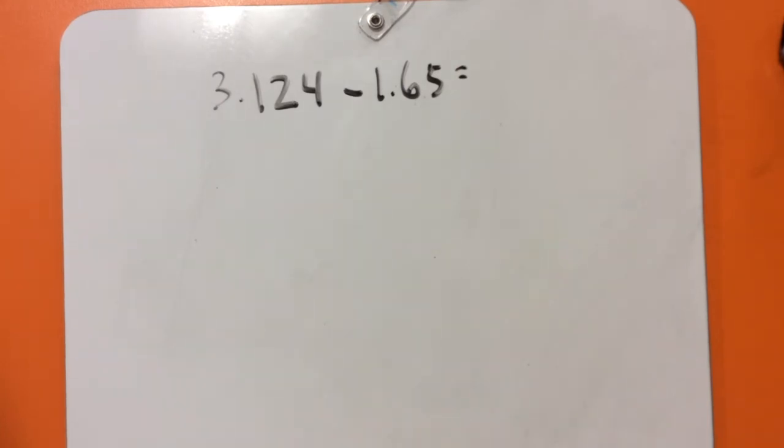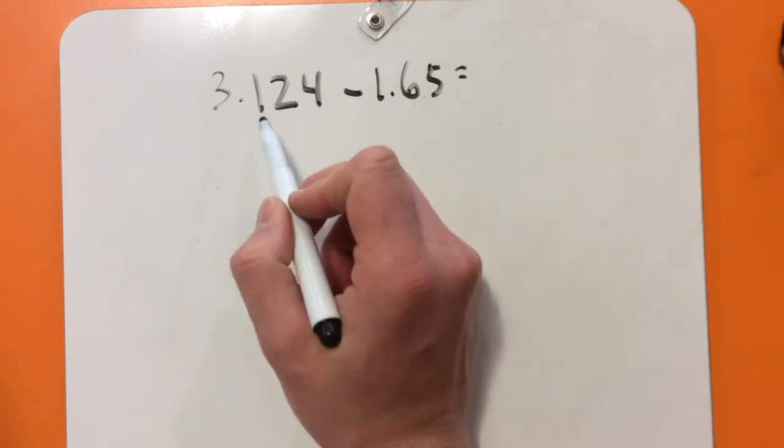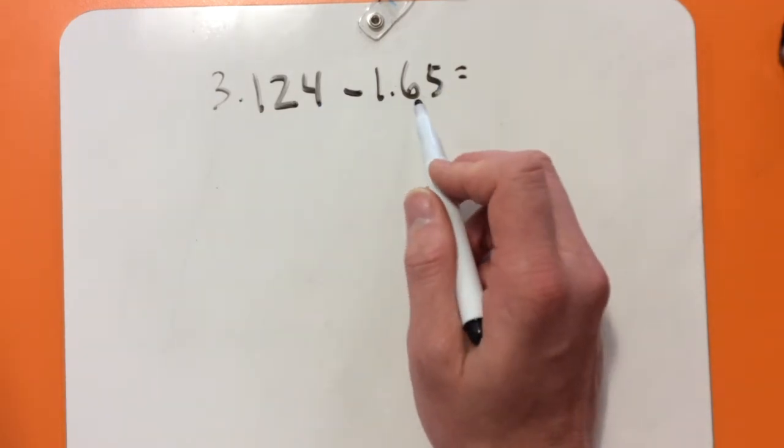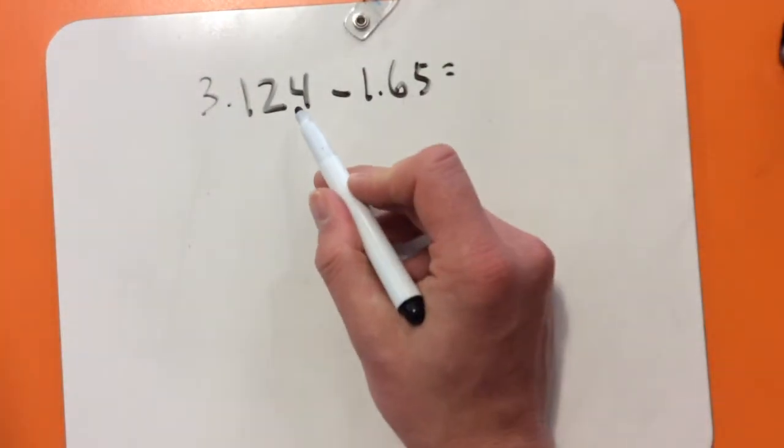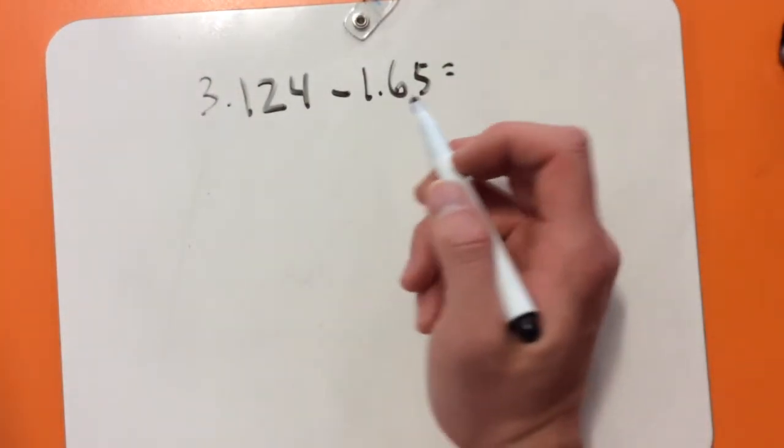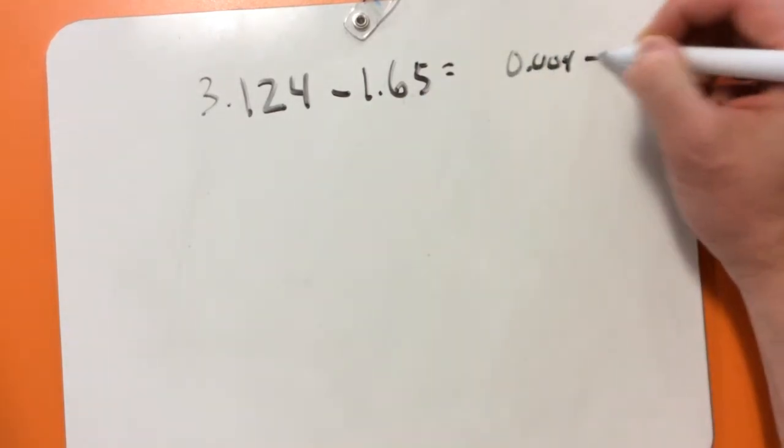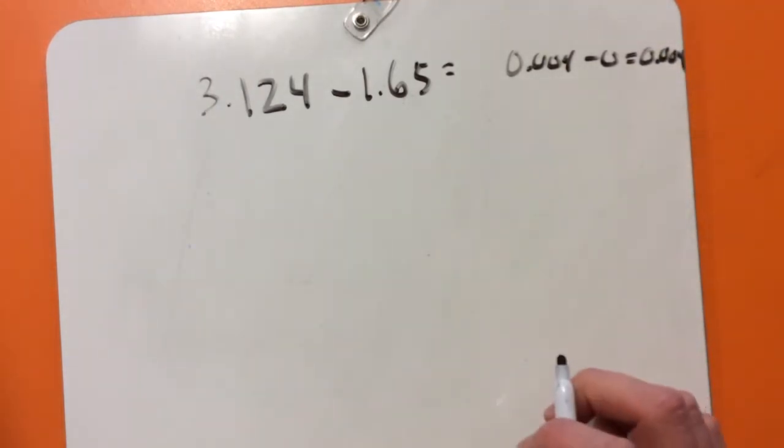I'm going to do this last problem, just with numbers. So we're going to start at 3.124. So that's 3.1s, 1.10, 2.00, 4.000, take away 1.1, 6.10, and 5.00. So there's nothing that goes with 1.00. So I know that I'm going to actually have 0.004, take away 0 is 0.04. It's really important to note that.